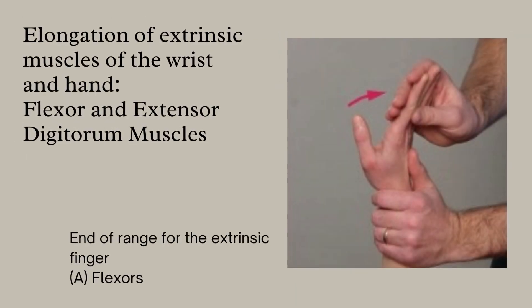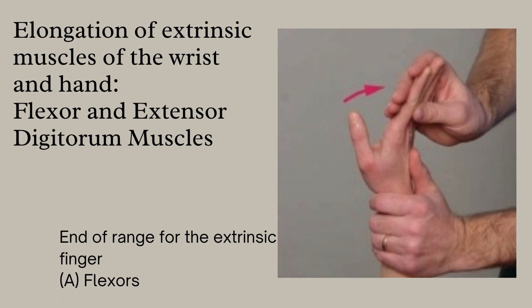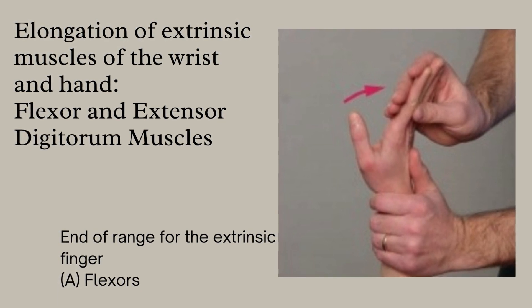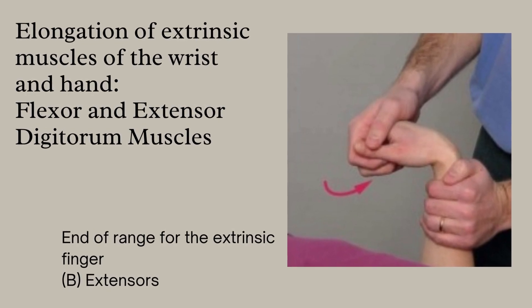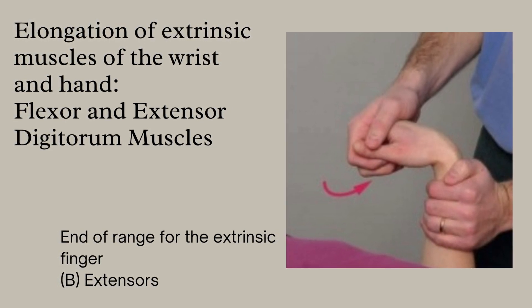After that, elongation of extrinsic muscles of the wrist — the flexor and extensor digitorum muscles — comes. By performing flexion and extension of the digitorum muscles, elongation of extrinsic muscles of the wrist and hand can be performed. Motion is initiated in the distal-most joint of each digit in order to minimize compression of the small joints. Full joint range of motion will not be possible when the extrinsic muscles are elongated. The next slide shows these range of motion techniques for the fingers of the extensors, like extensor digitorum.